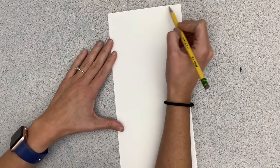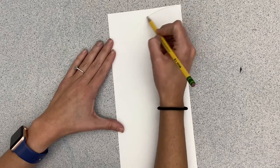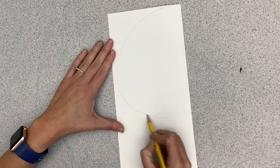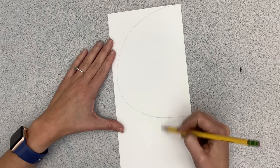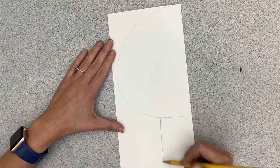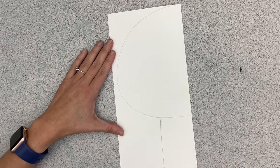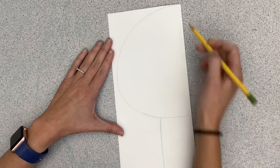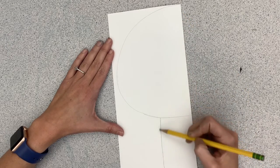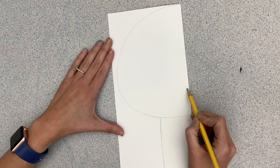We're gonna start by drawing a large oval shape. It should go three-fourths of the way down your paper. Then for the jaw of our skull, we're gonna draw a rectangle shape. It can go all the way to the bottom, but it does not have to. Make sure the bottom of it is rounded.